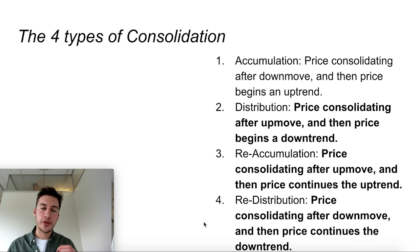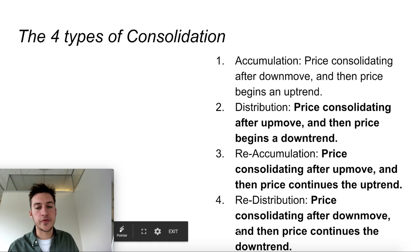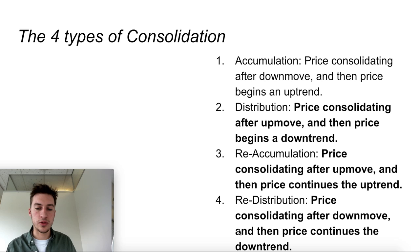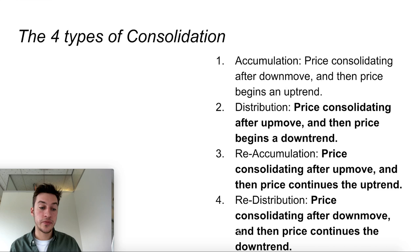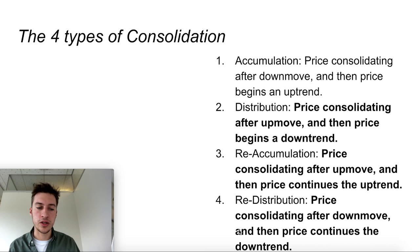Those are the four stages — accumulation, markup, distribution, markdown. Within the individual stages of overbought and oversold, there are also four different types of consolidation: accumulation, distribution, reaccumulation, and redistribution. Accumulation is when price consolidates after a downtrend and acts as a reversal, so price goes up. Distribution is the exact opposite — price consolidates after an uptrend and then begins a downtrend. Reaccumulation is price going up, consolidating, then continuing up. Reaccumulation and redistribution occur slightly more often than accumulation and distribution.